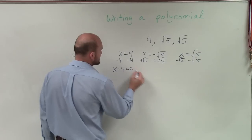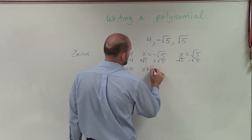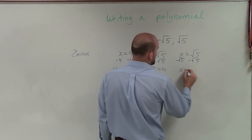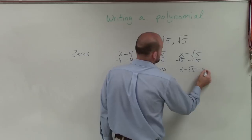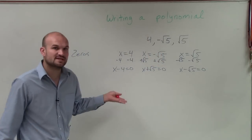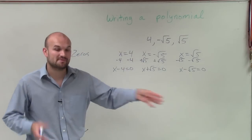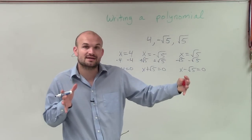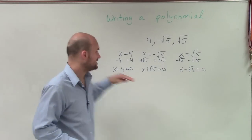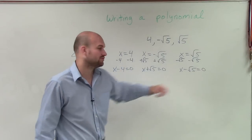All right. So therefore, I have x minus 4 equals 0, x plus the square root of 5 equals 0, and x minus the square root of 5 equals 0. Well, remember, how we got them set equal to 0 was we applied the zero product property, meaning we broke up the product that equaled 0 to each one of these terms to equal 0.